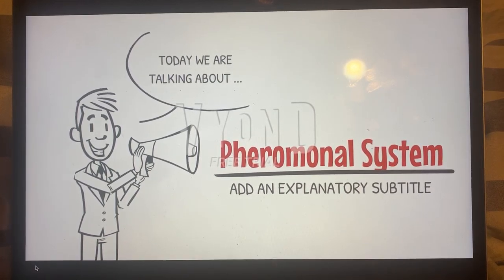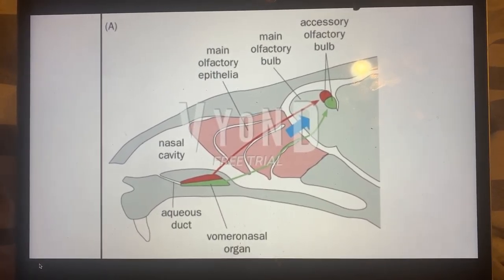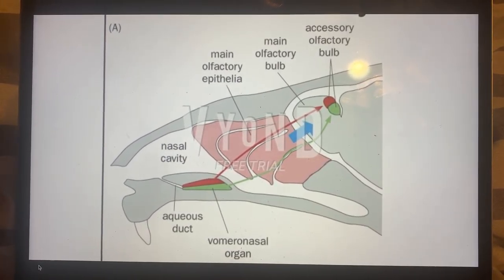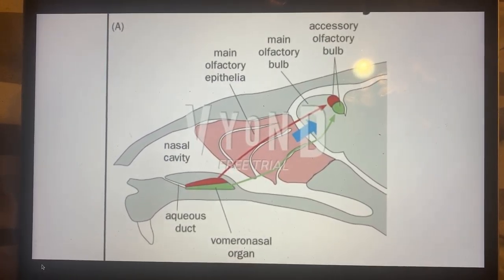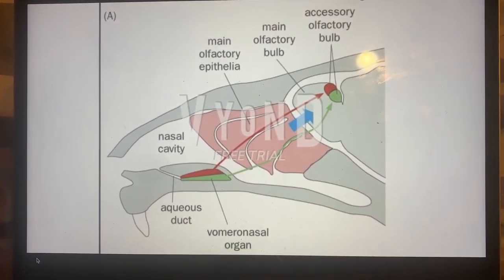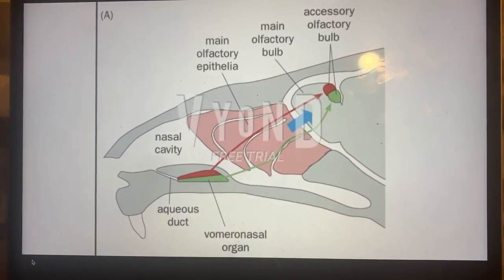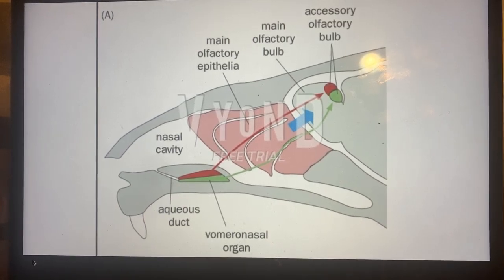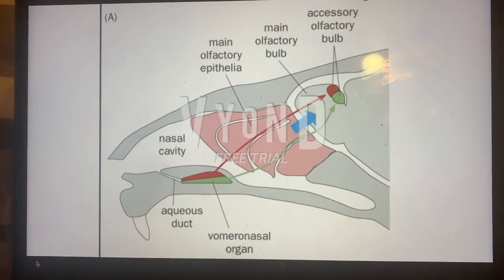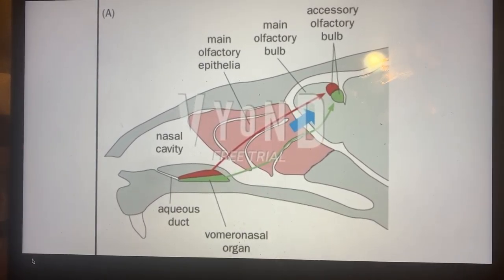So to talk about the pheromonal system, the first thing we could do is look at this picture. We see that the olfactory receptor neurons can eventually connect to the main olfactory bulb, which is where the combinatorial system comes into play, where there are multiple glomeruli connected to varying amounts of olfactory receptors. The combinatorial code allows for many receptors to be activated by a single odorant.